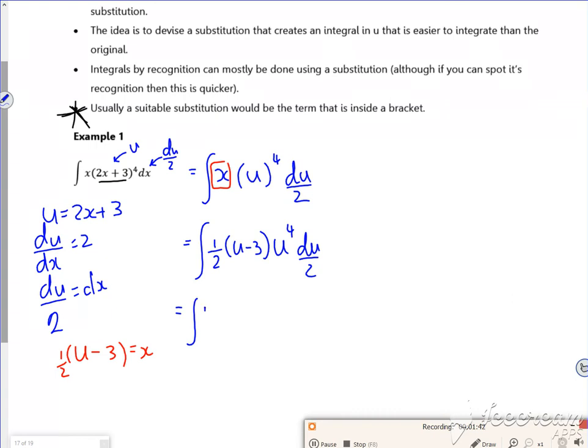I've got a half times a half is a quarter. I've got u times u to the 4 is u to the 5.